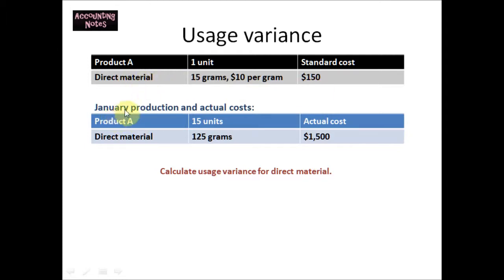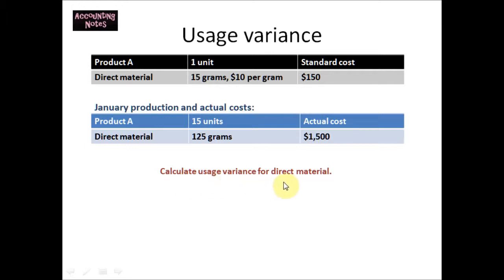In January, there was a production in which the company produced 15 units of product A. It actually cost $1500 to produce 50 units, in which 125 grams were used of direct material. We need to calculate the usage variance for direct material.